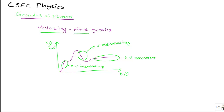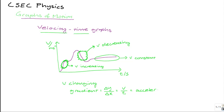Something else to recall is that for sections where the graph slopes either upwards or downwards — in other words, when the velocity of the object is changing — the gradient of that section, which is equal to the rate of change of your y-axis variable, is equal to change in v divided by change in t, which equals the acceleration of the object. Because acceleration is just the rate of change of velocity: change in velocity divided by change in time.